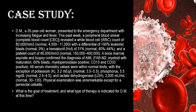Case study: a 35-year-old woman presents to the emergency department with increasing fatigue and fever — the main symptoms of AML. A peripheral blood smear and complete blood count reveal a white blood cell count of 80,000, with a differential of greater than 90% leukemic blasts, and a hematocrit of 31%. A bone marrow biopsy confirms the diagnosis of AML with 60% blasts. Serum chemistry values are within normal limits except for potassium, phosphorus, and lactate dehydrogenase (LDH). Physical examination was unremarkable except for perirectal cellulitis, which is an infection and also a symptom of AML.